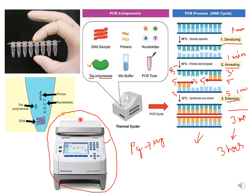In one cycle of PCR, suppose denaturation is kept for one minute, annealing for one minute, and extension for one minute — so one cycle is three minutes. If the thermocycler is set for 36 cycles, that will be 36 times 3 minutes, approximately three hours total. In this time, picograms of DNA input will be amplified to a higher amount — micrograms of DNA — which is why this technique is called amplification of DNA.